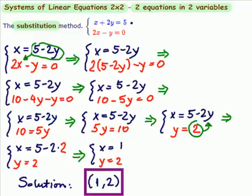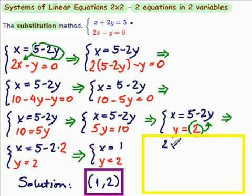Now we can check that by substituting back into the original equations. Let's see. We're going to substitute into the bottom equation. So what is it? 2x minus y equals 0. You could check it at least one equation.